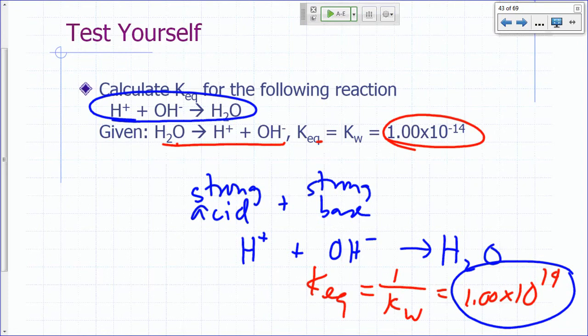So if you have a strong acid, strong base reaction in the lab, you would expect complete reaction pretty much. So in this case, the equilibrium will be all the way to the product side because you have a very large equilibrium constant.